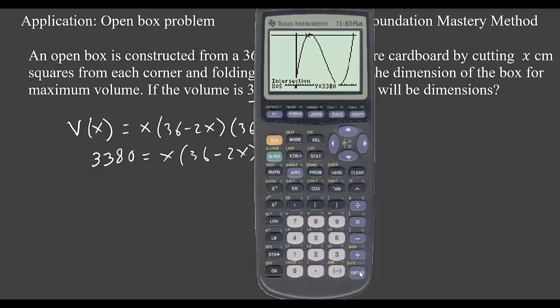So we write down x equals 5. That will give me volume equals 3380 cubic centimeters. Let us look at the next one. Go to second, trace.